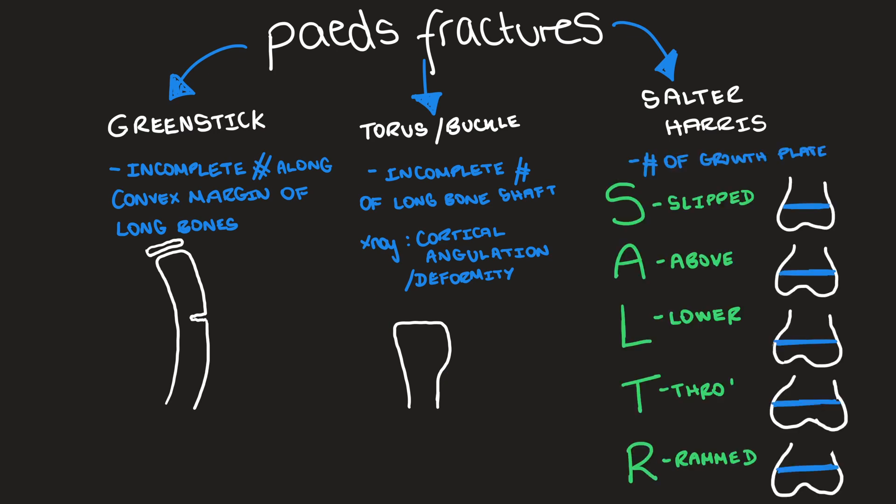There are five types of Salter-Harris fractures. These are fractures of the growth plate, and a nice way of remembering all five types is the mnemonic SALTER — that's Salter without the E.